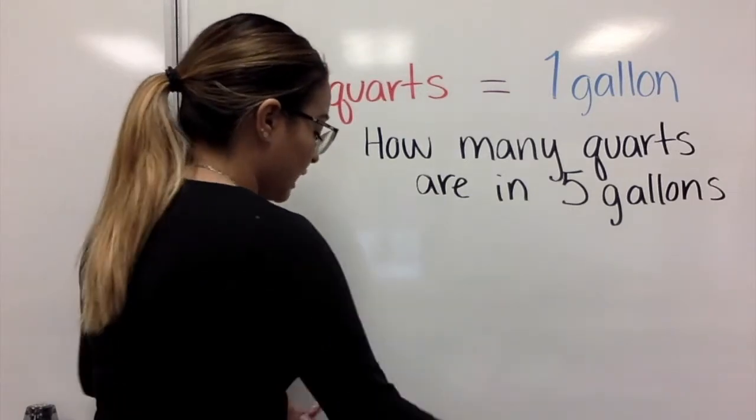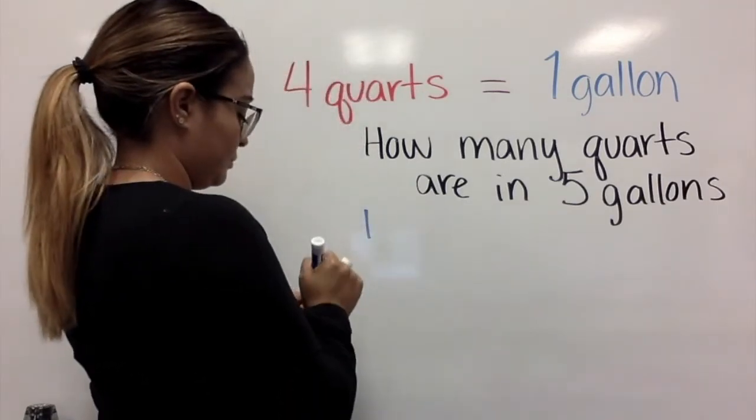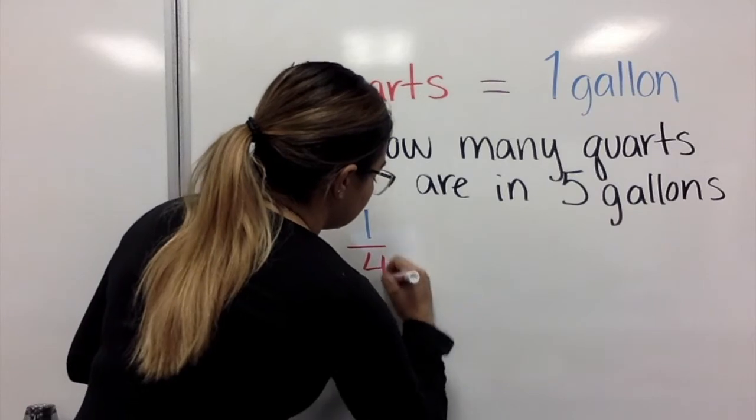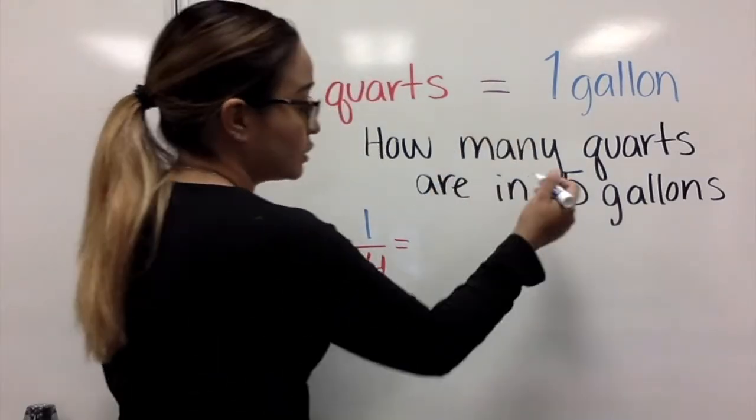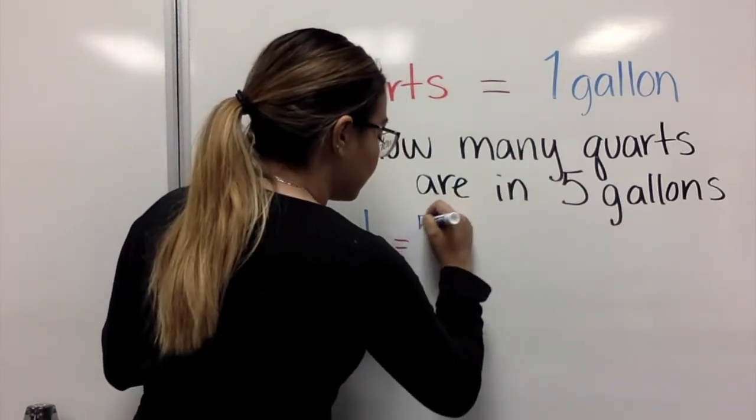So we have one gallon over four quarts. And we know that we want to figure out how many quarts are in five gallons.